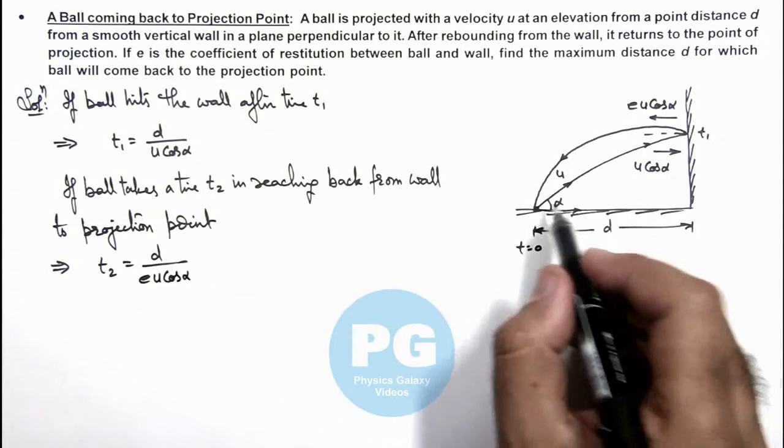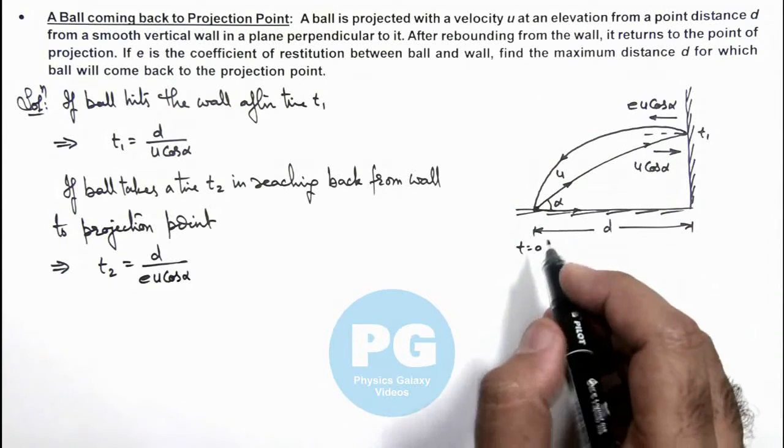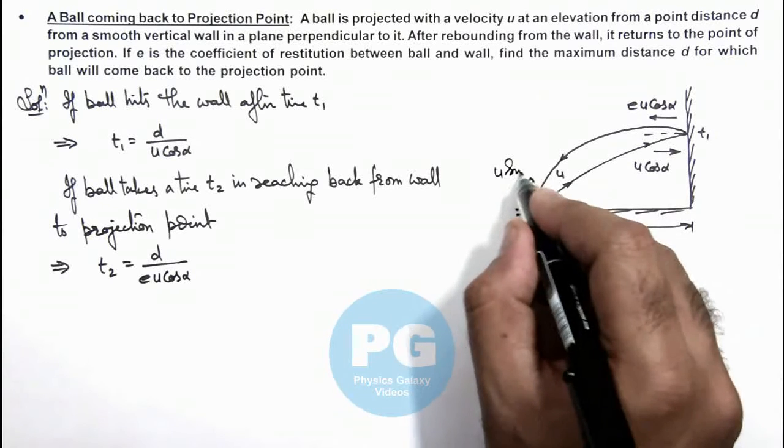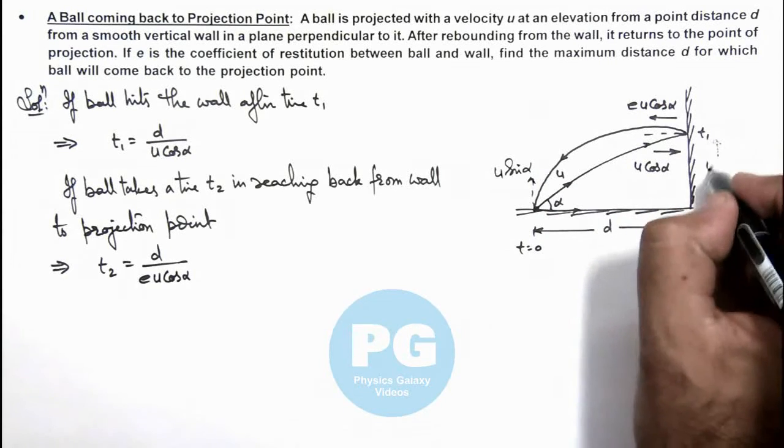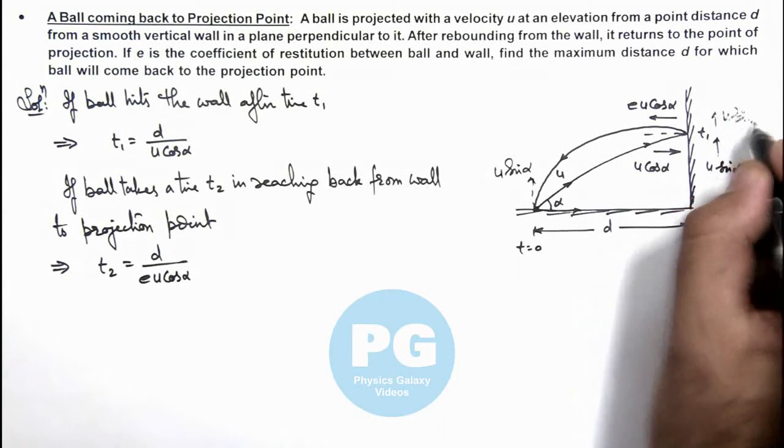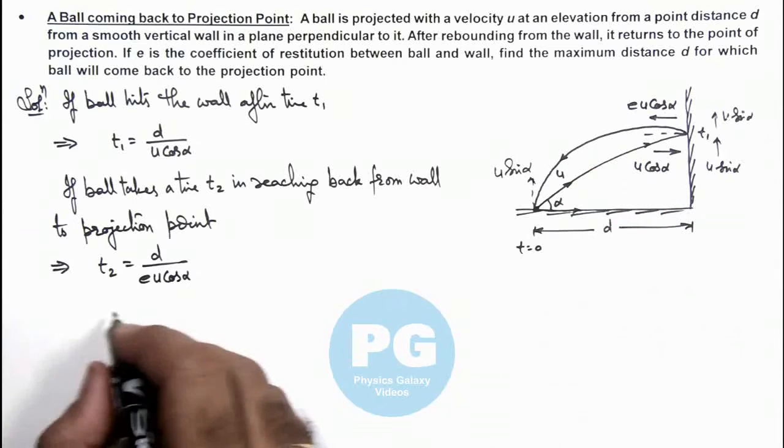And the total time in which ball is coming back is the vertical time of flight because the vertical velocity of ball is u sin alpha and as the wall is smooth, the ball strikes with u sin alpha and after collision also it moves up with u sin alpha, reaches a maximum height and then comes back.